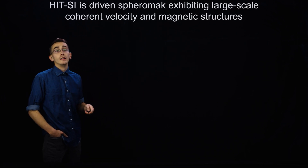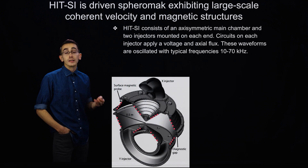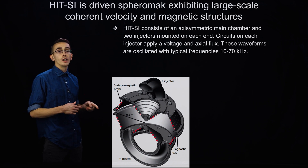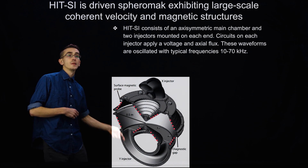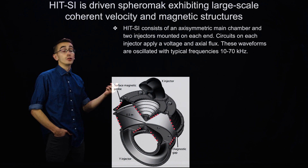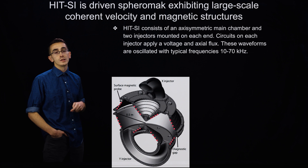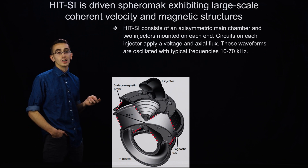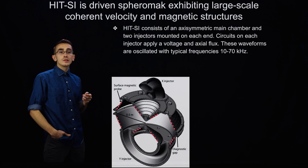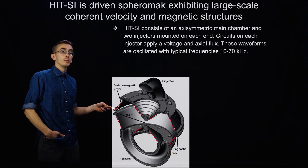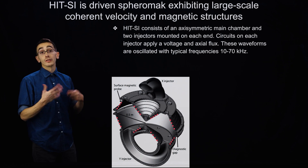HIT-SI is a driven spheromak and exhibits large-scale coherent velocity and magnetic structures. I'll discuss the geometry briefly. HIT-SI consists of an axisymmetric main chamber — a donut-shaped toroidal device — with two injectors at the top and the bottom. We apply a voltage and a flux through those injectors, and these waveforms are oscillated with typical frequencies of 10 to 70 kilohertz. This is a cross-section where we took a slice down the top. You can see in red the surface magnetic probes. For our purposes, we take the signals of all those magnetic probes as well as some internal probes inside the machine, put those into a data matrix, and perform the DMD on it.